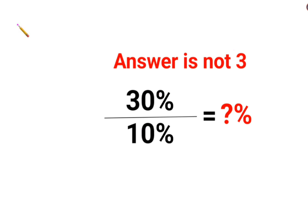The reason for that is, 30% can be converted into a number by dividing 30 by 100. So your question has now changed to 30/100 divided by 10/100, right?